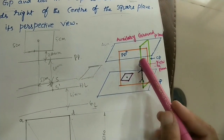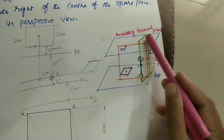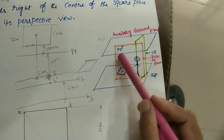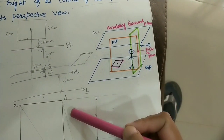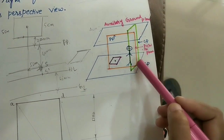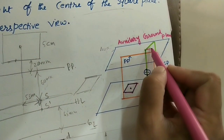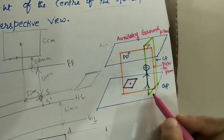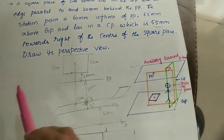One more plane also passes through the observer's eye — it is called CP, center plane. So we have GP, picture plane, and center plane. This center plane is perpendicular to the ground plane and also perpendicular to the picture plane — making 90 degrees with both. These three planes are important for doing the perspective view.